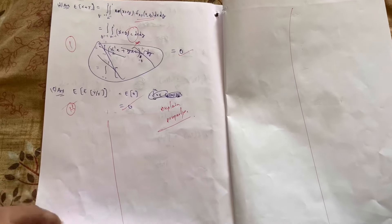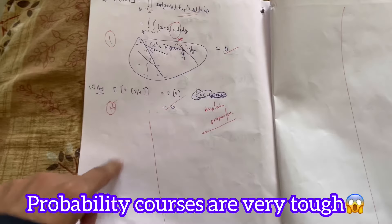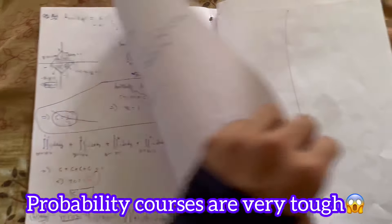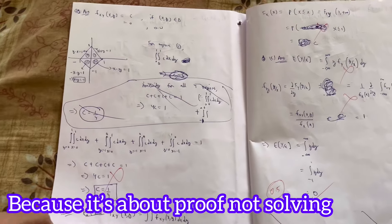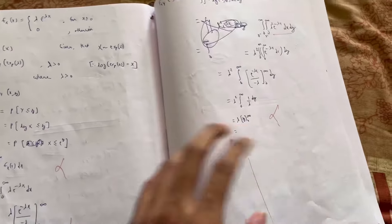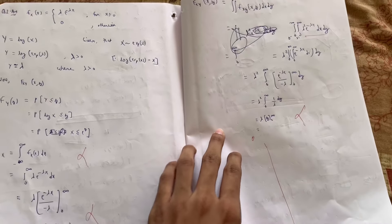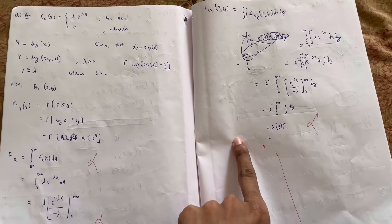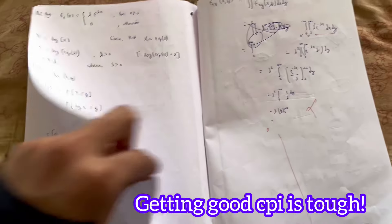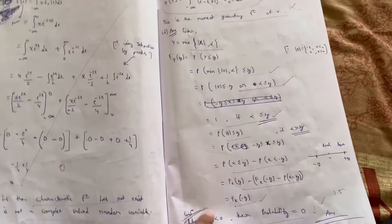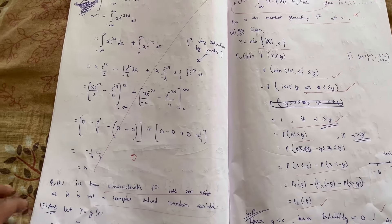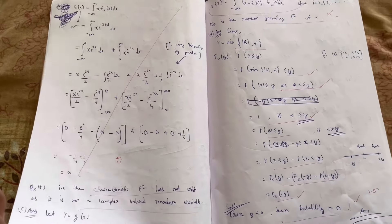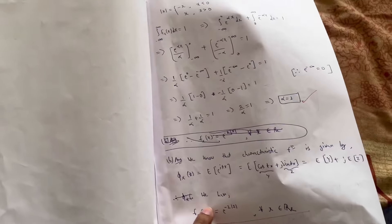यह next subject probability है और probability का subject कुछ ज्यादा ही hard होता है। जिनको नहीं पता average से क्या होता है — अगर तुम्हारा marks average के पास है तो 8 pointer बन जाता है आराम से, average से नीचे है तो 8 pointer से कम, और average से ऊपर है तो 8 pointer से ज्यादा। (The next subject is Probability, which is quite hard. For those who don't know — if your marks are near the average you get around 8 pointer, below average means less than 8, above average means more than 8.)